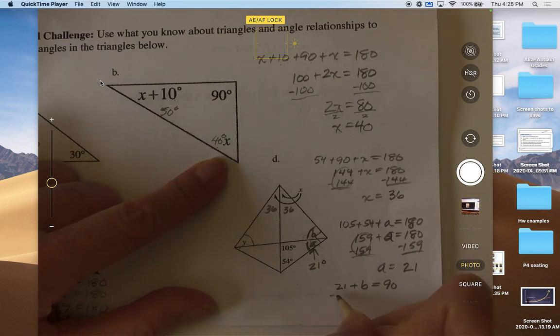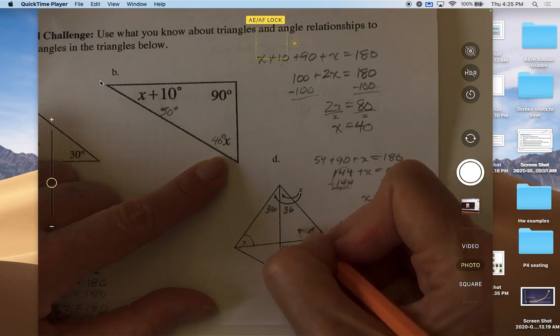Minus 21 from both sides will get us what b is equal to. This zeroes out. 90, so that's 70 minus 1 is 69. So now we know that b is 69 degrees, so this angle is 69 degrees.